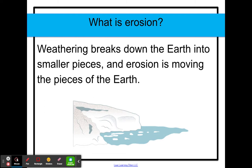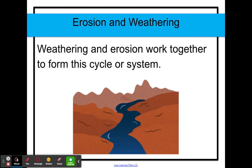So what is erosion? Weathering breaks down the earth into smaller pieces, and erosion is moving the pieces of the earth. Weathering and erosion actually work together to form this cycle or system, and usually one comes before the other and vice versa.